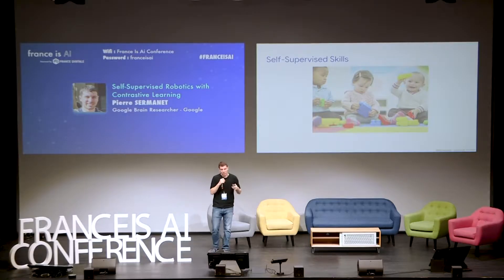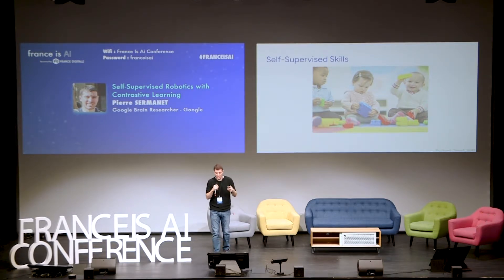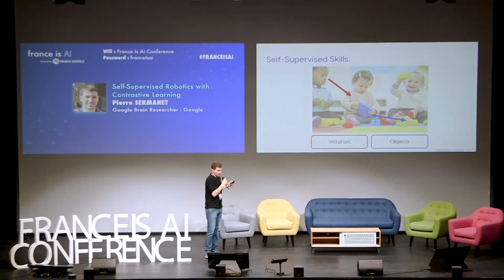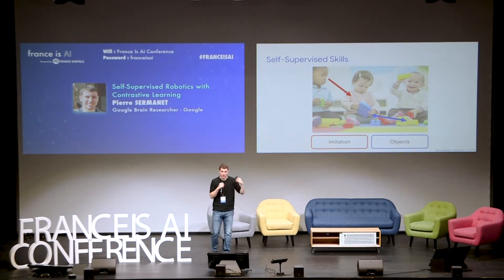In this talk, we're going to focus on acquiring two very important skills for robotics: one is imitation, and one is learning about objects. Note that we're going to self-supervise to acquire these skills. But once we have these skills, we can also use them to self-supervise even more and unlock higher-order signals for self-supervision.